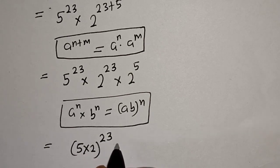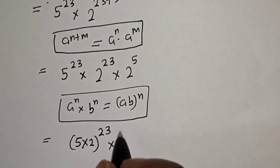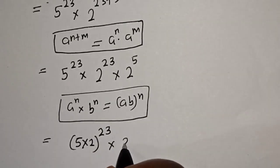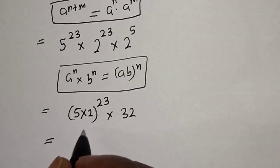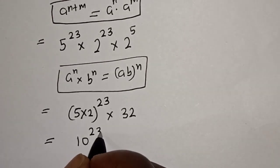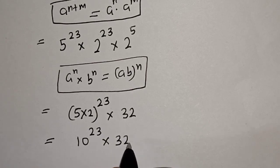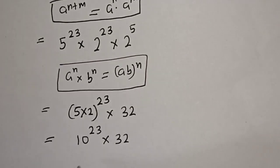This is equal to 5 times 2, raised to power 23, multiplied by 2 raised to power 5. That gives us 10 raised to power 23 multiplied by 32. Then in order to put this in standard form...